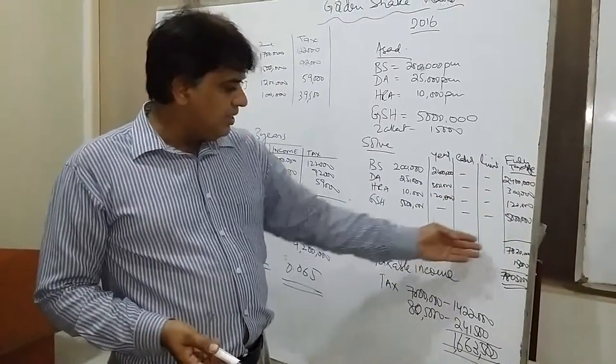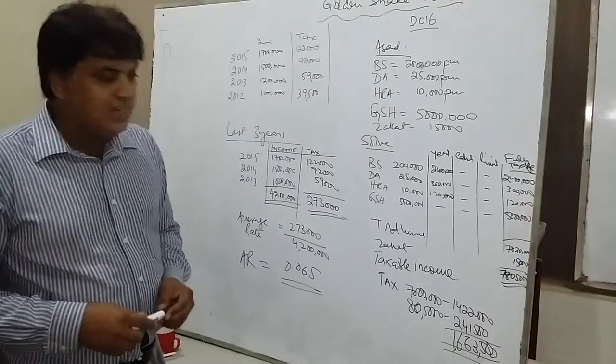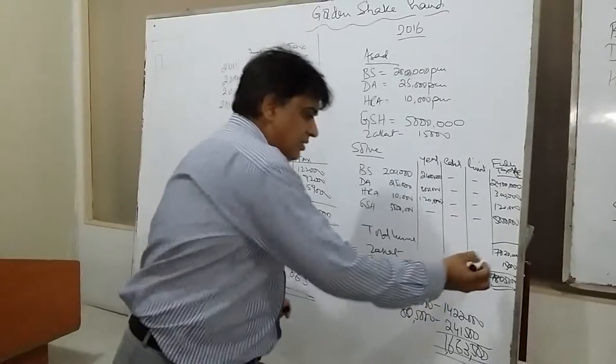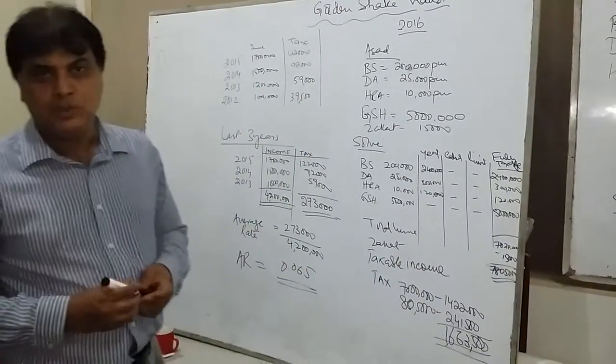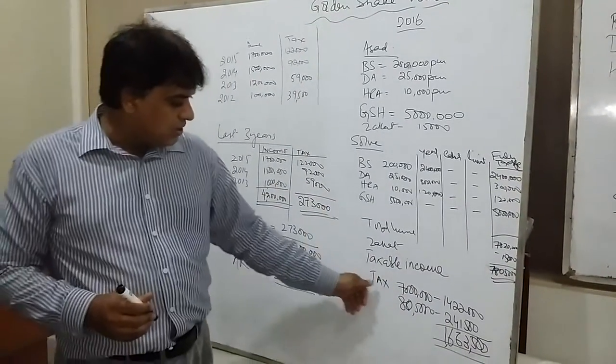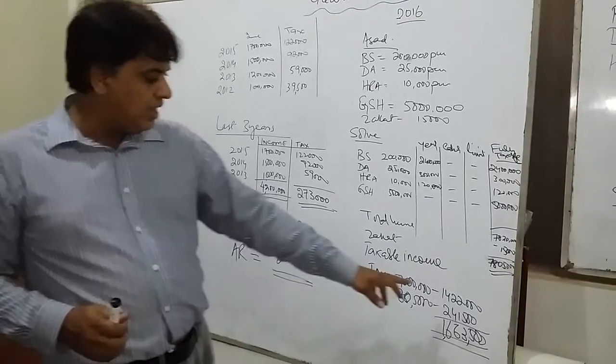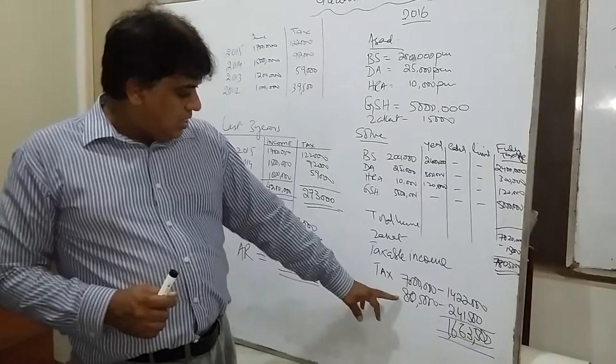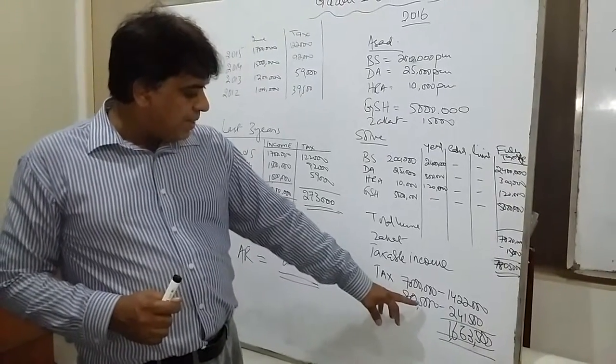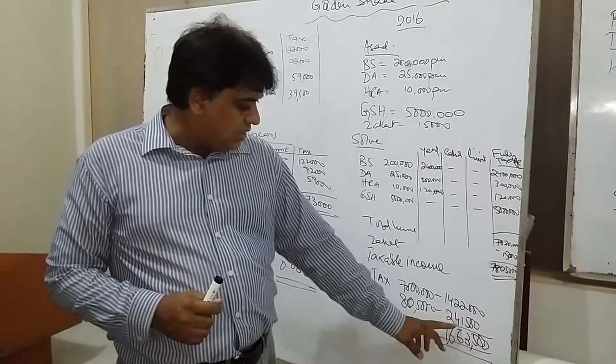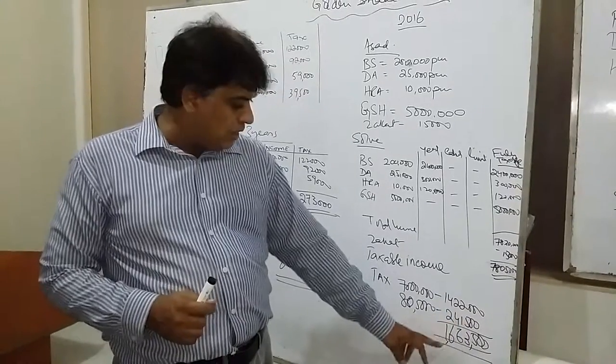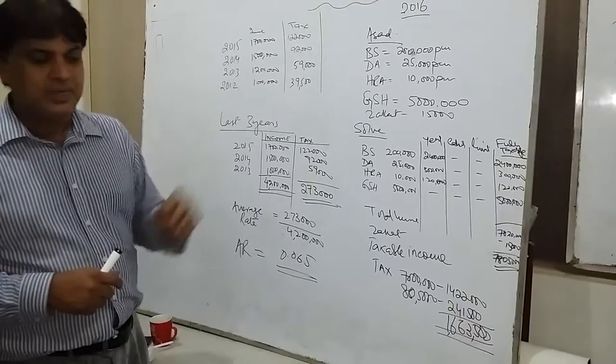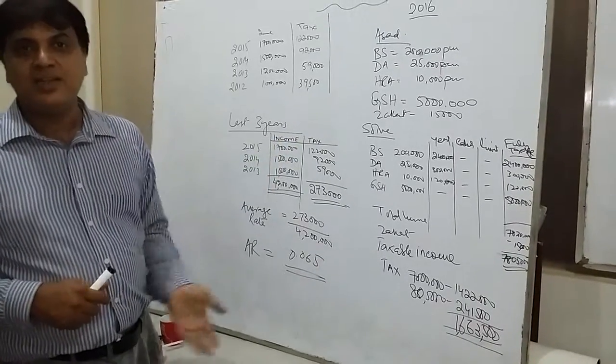The total income is 78,20,000 per month, which we have minused the Zakaat. The tax will pay 70,000 per month. This is an alternative method.